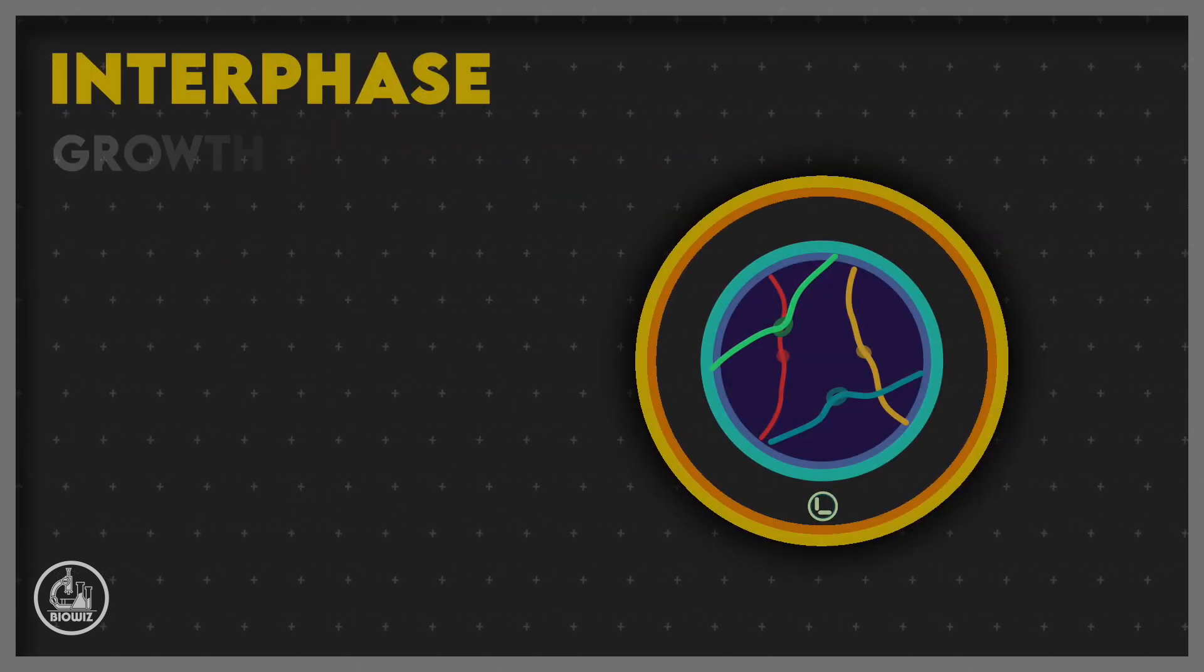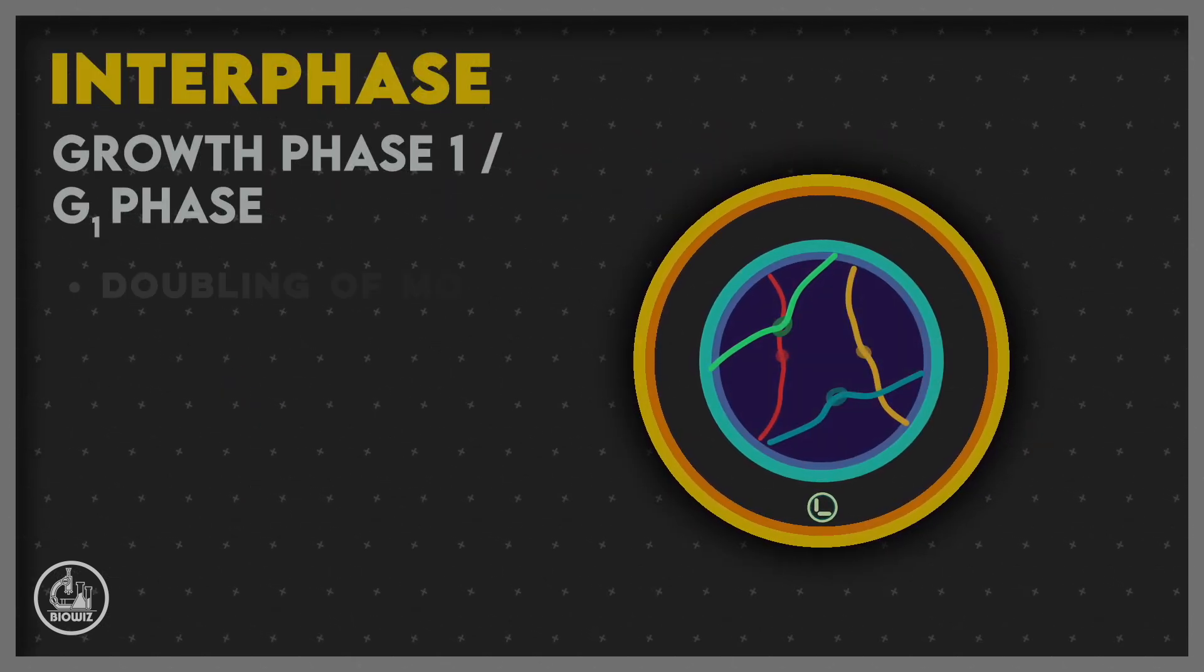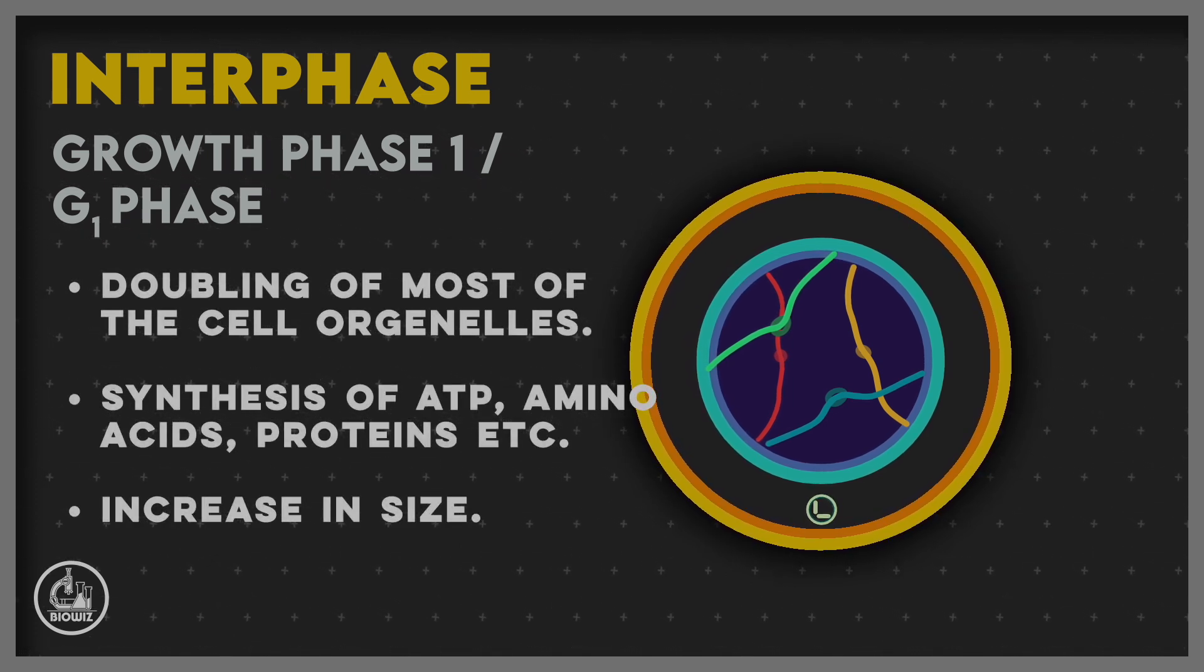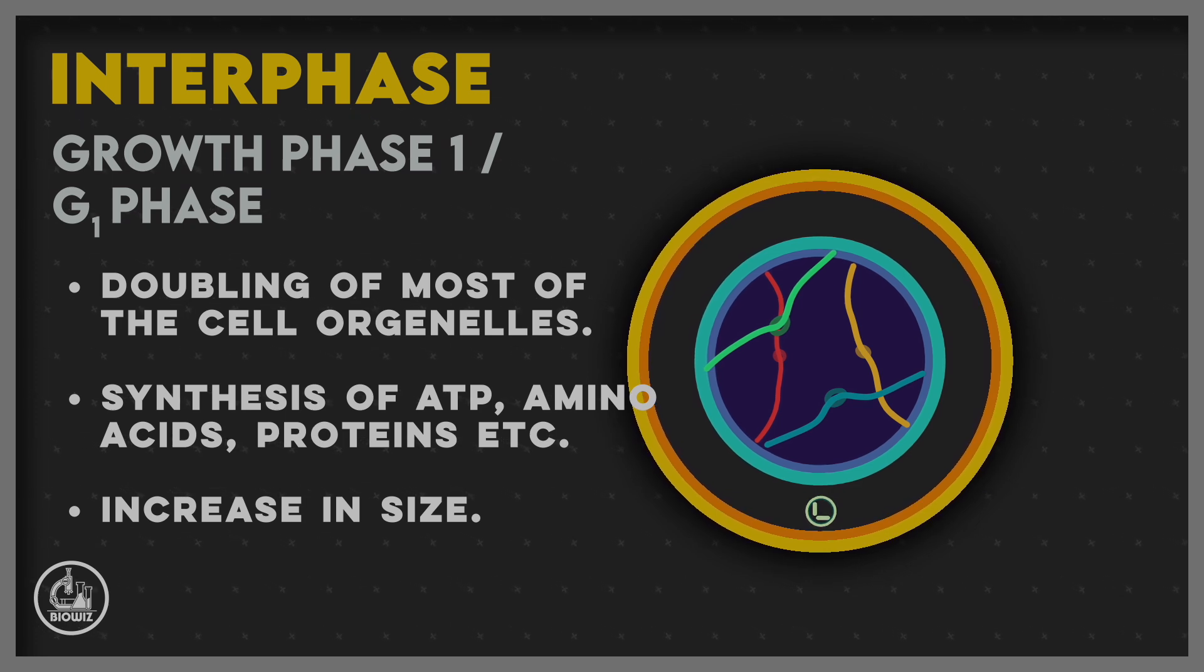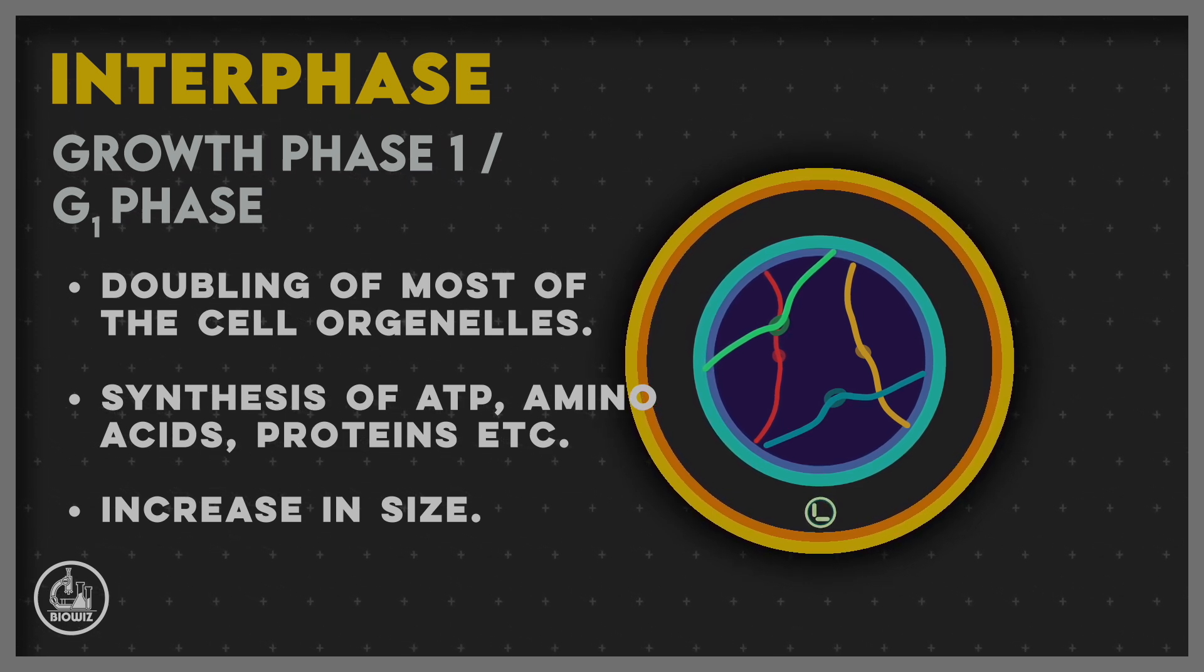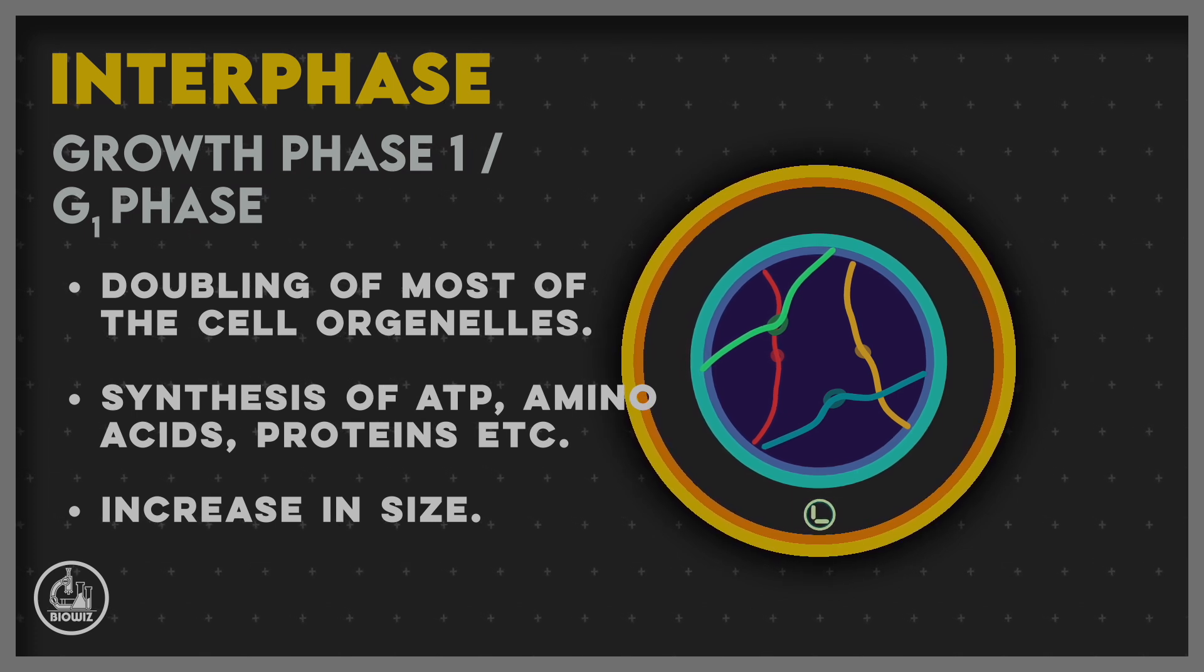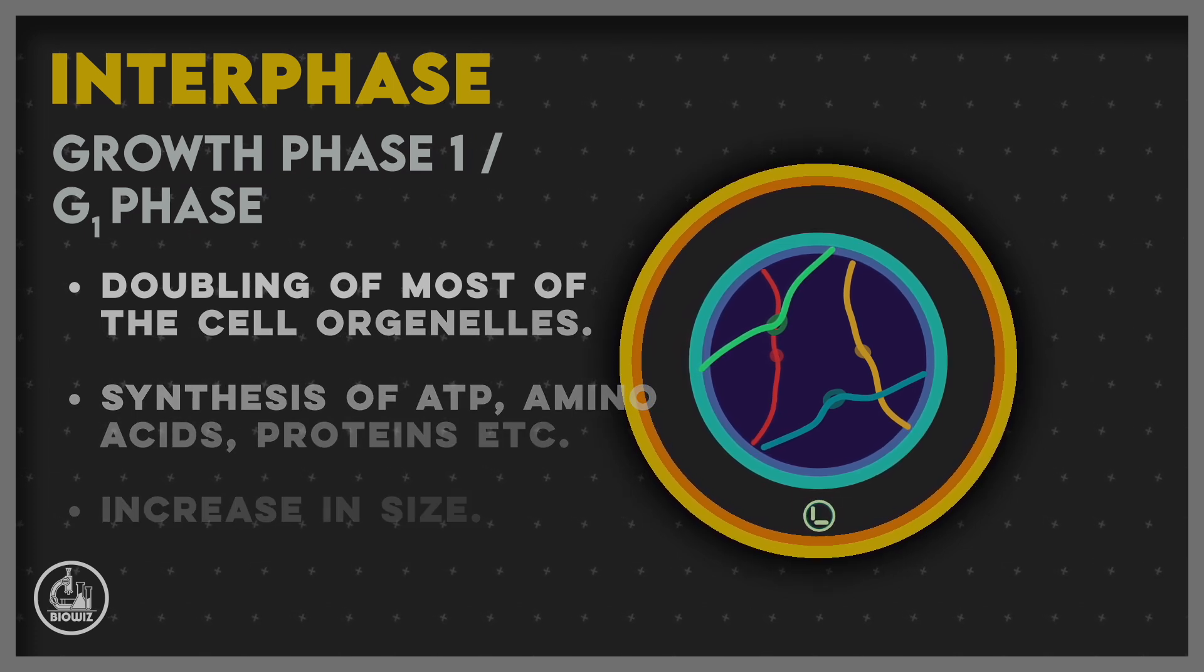G1 phase is mainly characterized by doubling of most of the cell organelles, synthesis of many biomolecules like amino acids, proteins, and ATP. The cell size increases, and G1 phase is also the longest phase of the interphase.